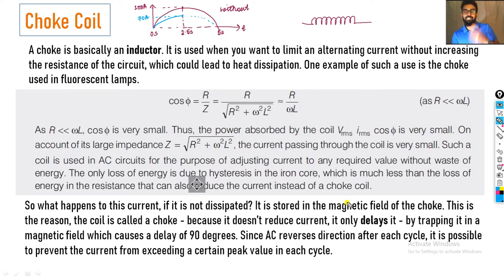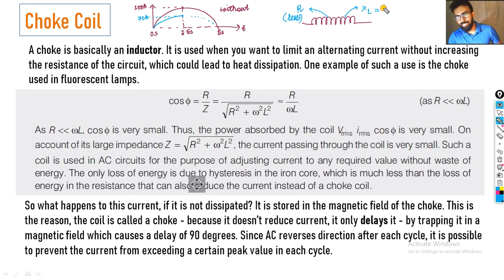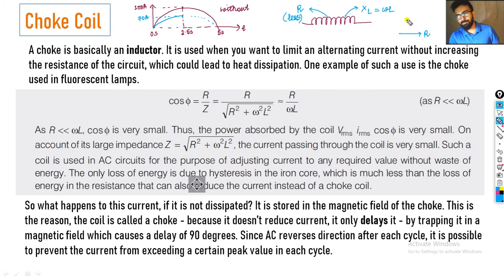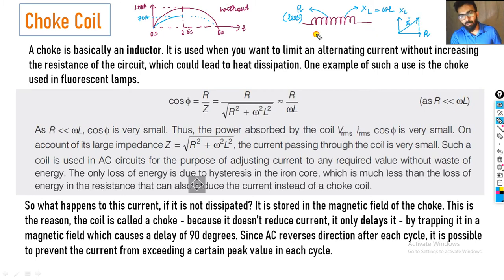अभी अगर थोड़ा mathematically analyze करना है तो बात को समझो। Real inductor के साथ कुछ न कुछ resistance होगा, पर यह resistance बहुत ही कम होगा — windings से कुछ न कुछ resistance होगा। और inductor का खुद का जो dynamic resistance है — XL — उसको omega L लिख सकते हैं। तो इस inductor का resultant impedance क्या है — impedance R plus XL कभी मत लिखते हैं। हमको इनको vectorially treat करना है। यहाँ पर R है, यहाँ पर XL है — ये 90 degree out of phase परहा है। So Z = √(R² + XL²)।